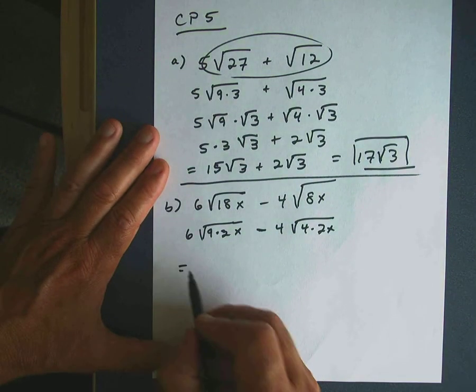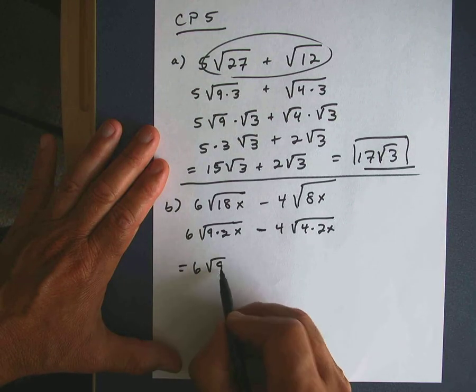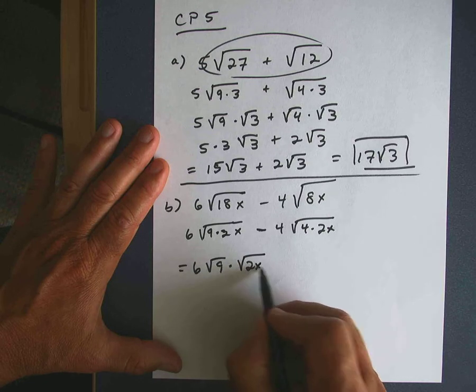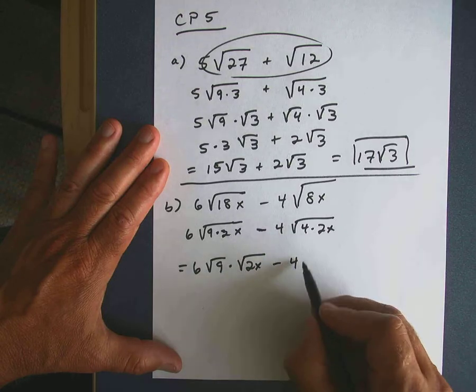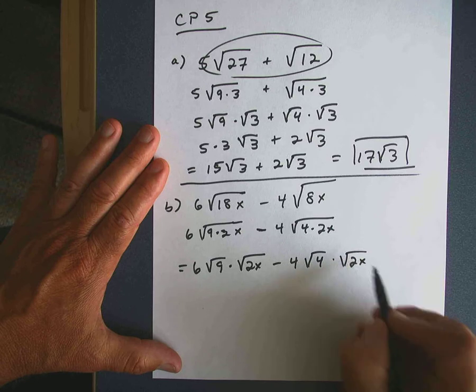Okay, then we'll separate out what we can. We have 6. Let's separate out the square root of 9. And I might as well leave the 2 and the x together underneath, because I can't really simplify that part. Let's separate out the square root of 4, and then I have the square root of 2x left.